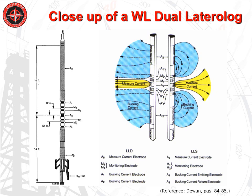The tool will make the shallow measurement, reconfigure the electrodes internally, and then make the deep measurement. Also note that the currents in these diagrams are shown in only two dimensions. In reality, the current flow out of the tool is radial in three dimensions.